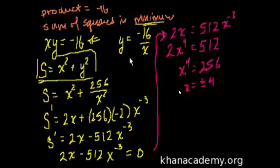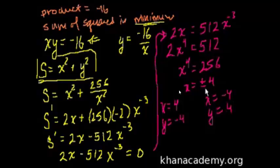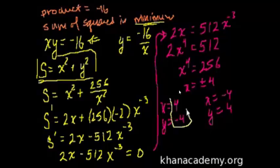If x equals plus or minus 4, then y equals minus 16 divided by x. If x is 4, then y equals minus 16 divided by 4, so y equals minus 4. If x is minus 4, then y equals minus 16 divided by minus 4, so y equals 4. So the two numbers are 4 and negative 4 — it doesn't matter which we call x or y.